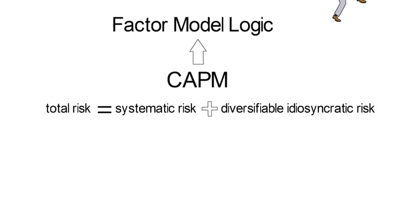total risk of an asset consists of systematic risk and undiversifiable idiosyncratic risk. And second, the idiosyncratic risk component converges to zero if that asset is part of a sufficiently large portfolio.